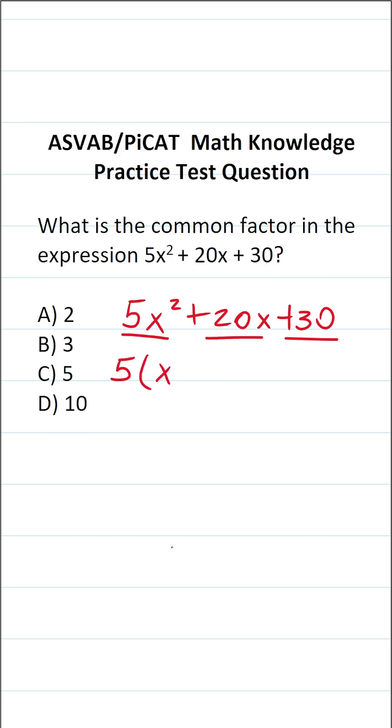And if we factor out a 5, this leaves us with x squared plus 4x plus 6 in parentheses. So this one is going to be C, 5.